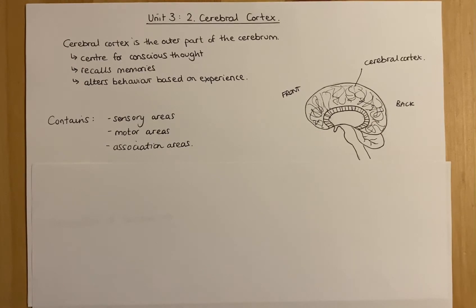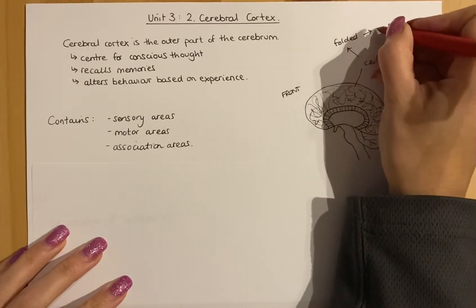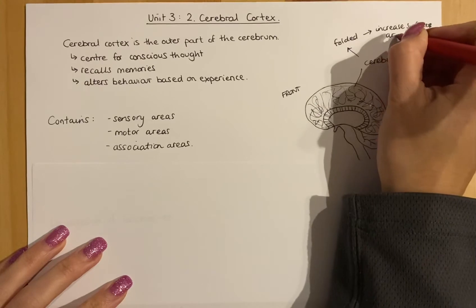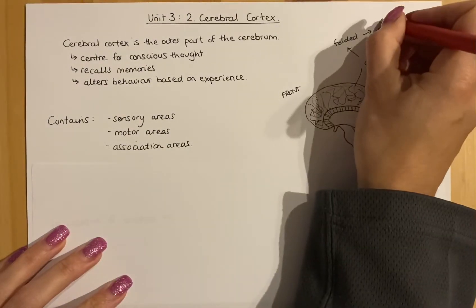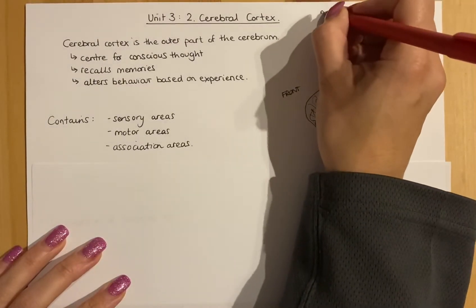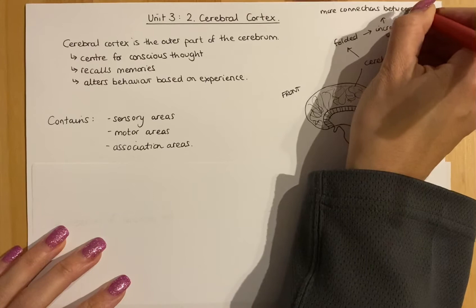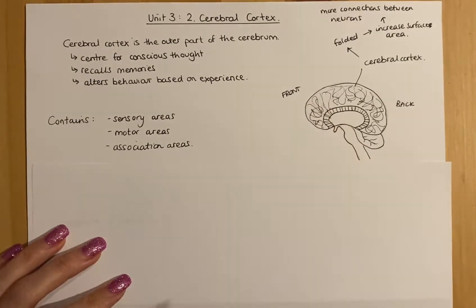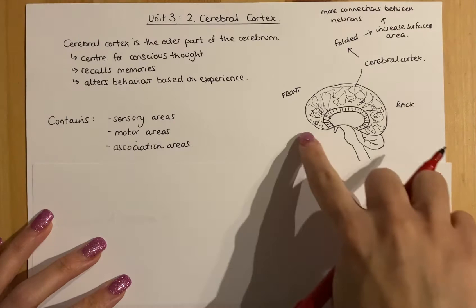Some A-style questions will ask you to suggest a reason why the cerebral cortex is folded. Think back to National 5 — the small intestine is folded to increase surface area. The cerebral cortex is folded to increase surface area, specifically to allow for more connections between neurons. So anything folded in biology is basically about increasing surface area for something.